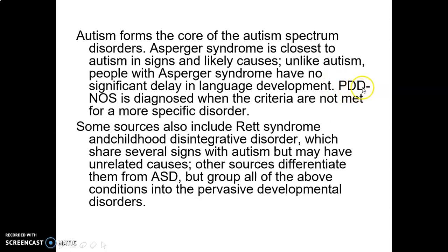Pervasive developmental disorder — not otherwise specified (PDD-NOS) — is diagnosed when the criteria are not fully met for a more specific disorder. Some sources also include Rett's syndrome and childhood disintegrative disorder, which share several signs with autism but may have unrelated causes. All of the above conditions are grouped under pervasive developmental disorders.